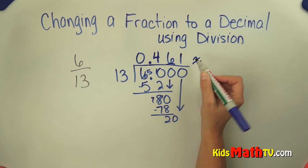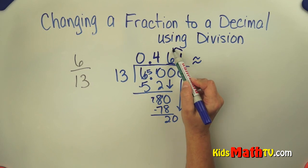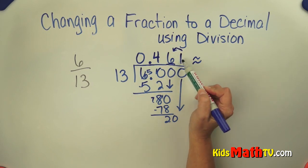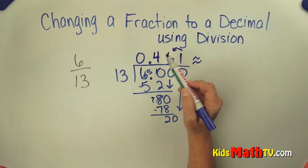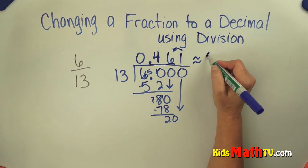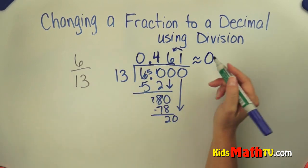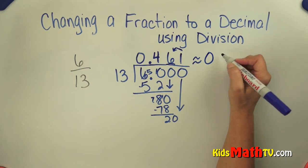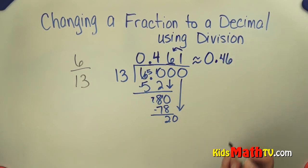If I'm rounding to the nearest hundredths place, this one is going to tell that six whether it stays a six or moves up. And since it's a one, that stays a six. So my answer, 6/13, is equal to approximately 0.46 hundredths.